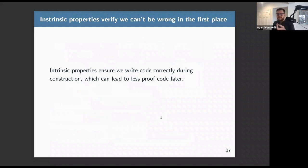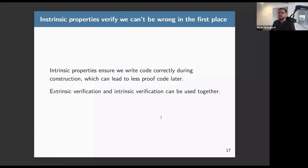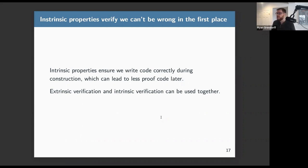Intrinsic properties verify that we can't be wrong in the first place — code is correct by construction. This can lead to less separate proof code. Some people prefer intrinsic properties, some prefer extrinsic verification; it depends on the problem. They work together — you can have types with intrinsic properties and still prove extrinsic properties about them. They're different spots in the design space.